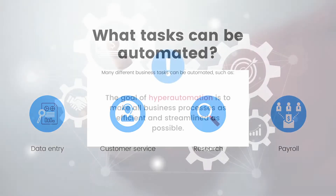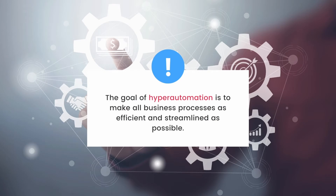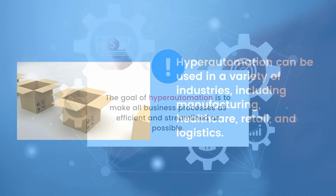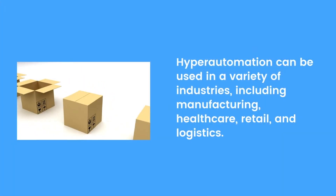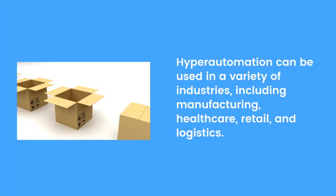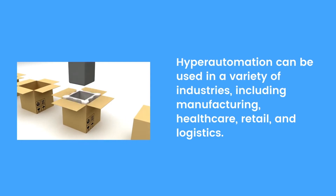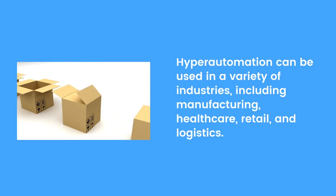The goal of hyper-automation is to make all business processes as efficient and streamlined as possible. Hyper-automation can be used in a variety of industries, including manufacturing, healthcare, retail, and logistics.